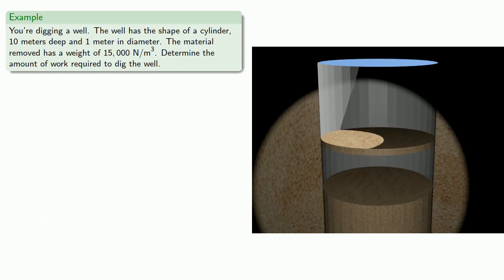So remember, work is the product of force and distance. So that little slab has a weight of 3750 pi dx newtons. Now we have to bring it up to the top of the well, and that's going to require us to move it a distance of x meters. And so the work done will be the product of the weight, 3750 pi dx, times the distance we have to move that weight, x meters.